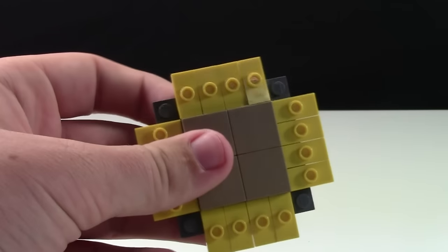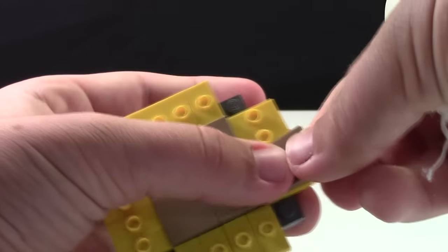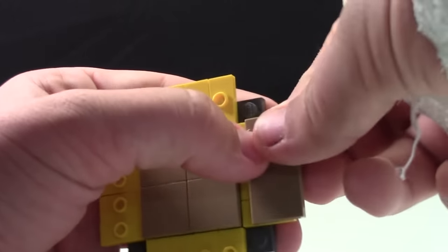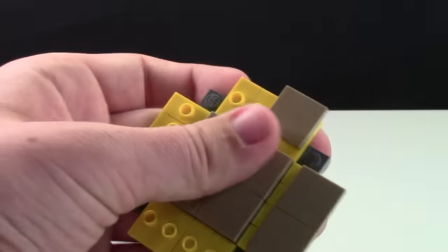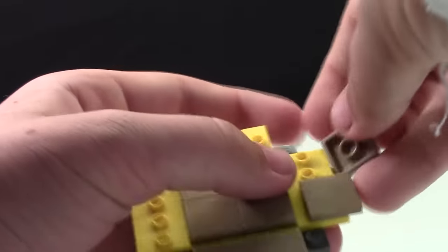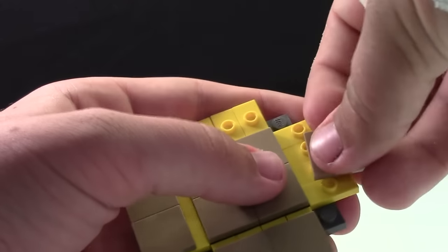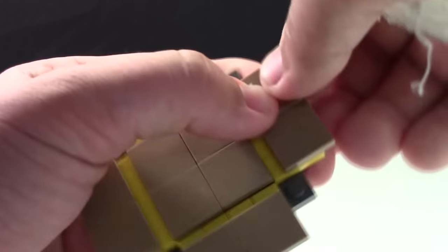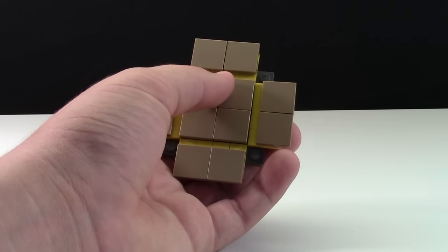Once all the jumper plates are on the base plate, take the 2x2 tiles and attach them so each tile covers two jumper plates. You only need two on each side to cover four jumper plates. This will use up most of your remaining tiles. Once it looks like this, you know you're doing it right.